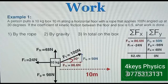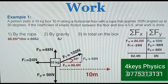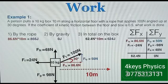The work done by the rope equals the horizontal component of the applied force times the distance: 86.6 × 10 = 866 J. Gravity acts at 90° to the horizontal displacement, so it does zero work on the box. The total work done on the box uses the net horizontal force: 86.6 − 24 = 62.4 N, multiplied by 10 meters, giving 624 J.